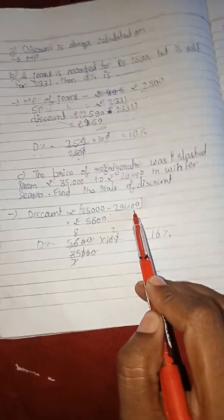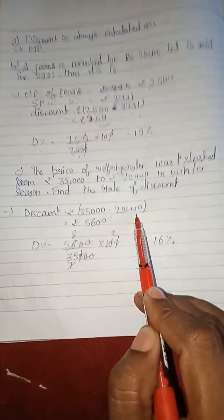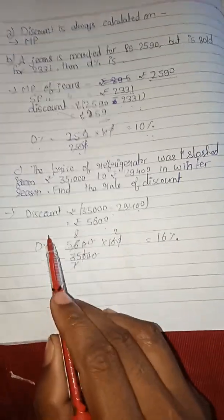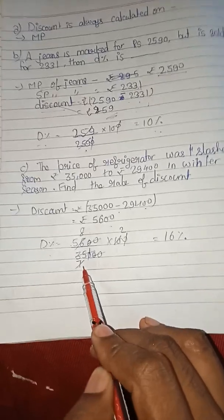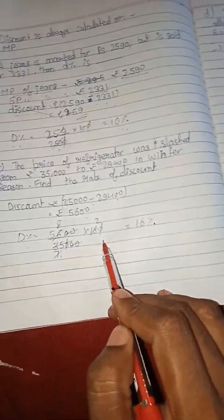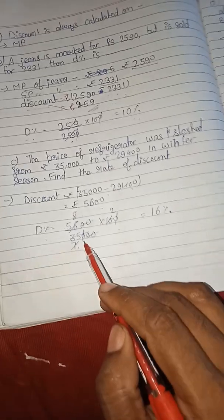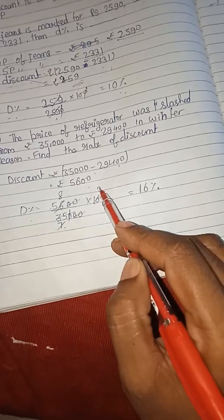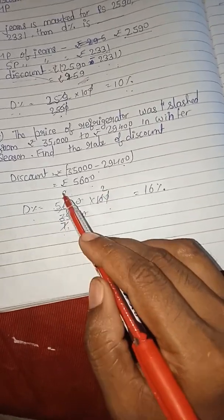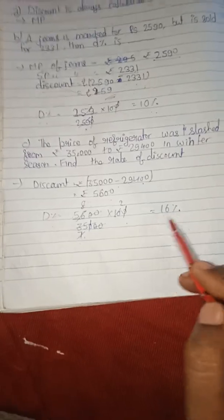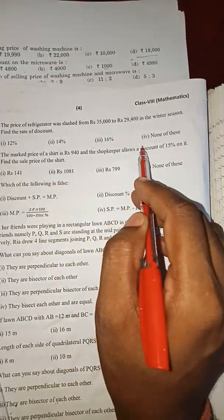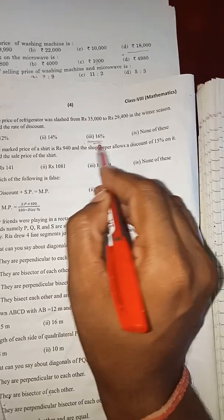So here you can see that the solution of that question: discount equals 35,000 minus 29,400. After the slashed means after the given discount, the value. So discount is 5,600. And discount percent again we will find: discount by previous, the earlier value, into 100. 5,600 by 35,000 into 100. 20 and 10 cancel, 5 times 2, and 5 times 7, and 7 times 8 is 56. So 8 times 2, that's 16 percent. So discount here is 16 percent. In question number C you can see the options: 12 percent, 14 percent, 13 percent, and none of these. So the option will be none of these, the right answer is 16 percent.